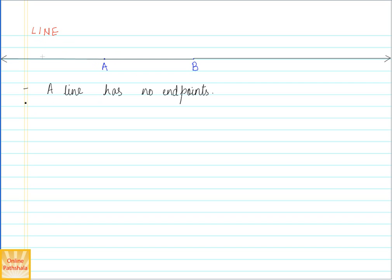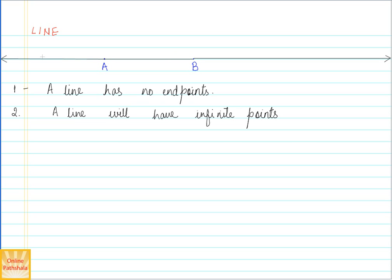Another observation we need to note about a line is that it will have infinite points. Why infinite points? We discussed that a line segment has finite points because it has a start point and an end point. But a line has no end points, which means it has infinite points. Because of this definition, a line simply has no end point and hence it has uncountable points.